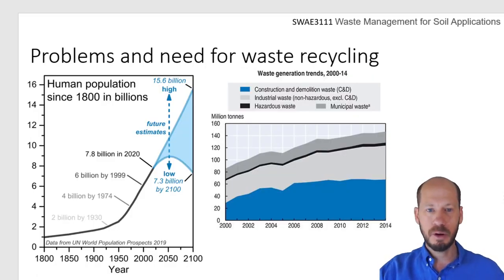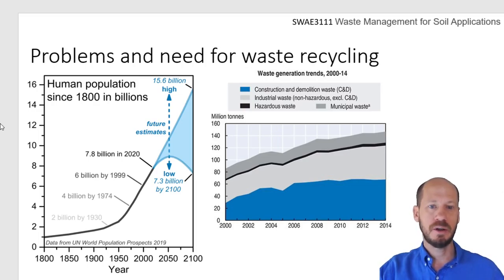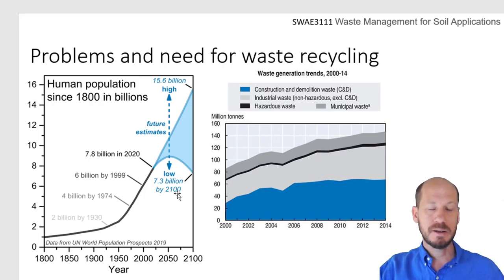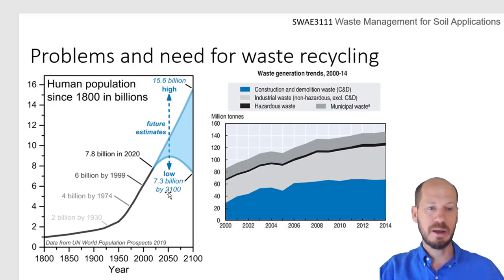The big background problem is the human population. Every increase in human population exerts very high pressure on natural resources. We are over 7 billion people on the planet now, and this will only increase in the future. We're hoping for stabilization, but it's very hard to project. The ever-growing population is producing more and more waste, and the disposal of this waste becomes a huge problem for societies and the environment.